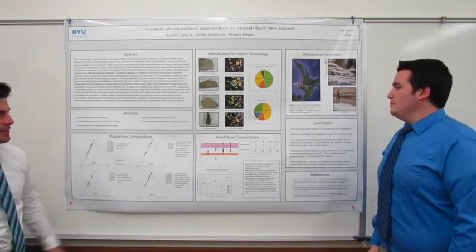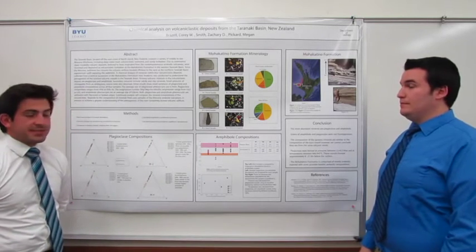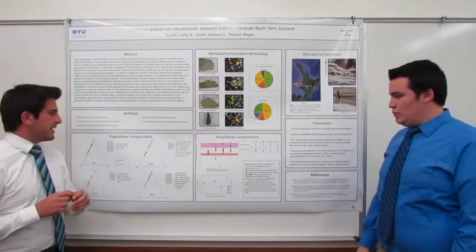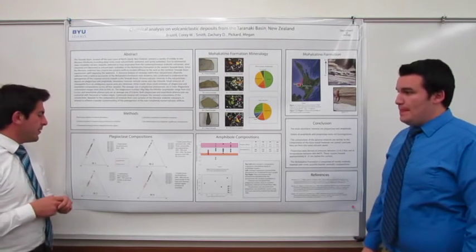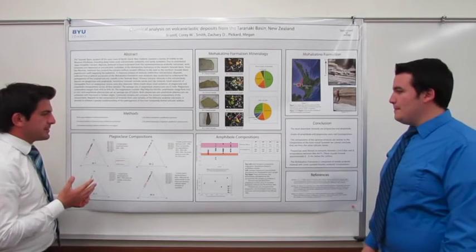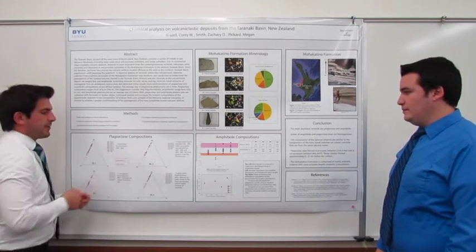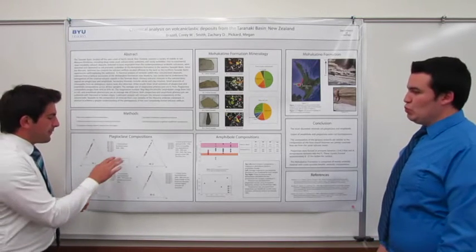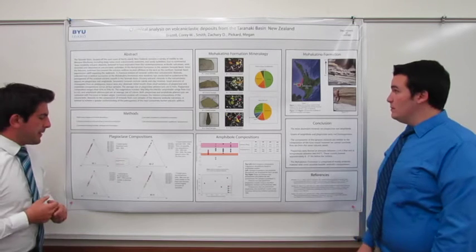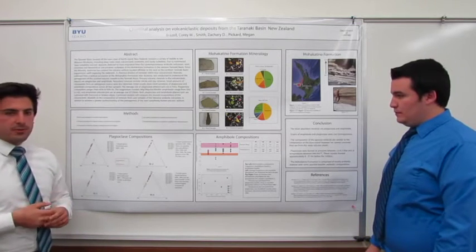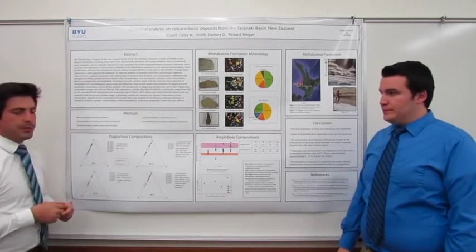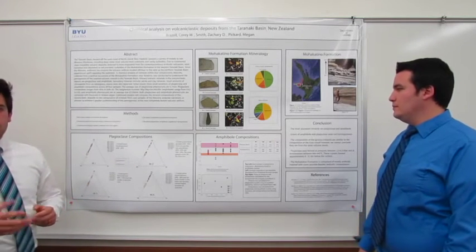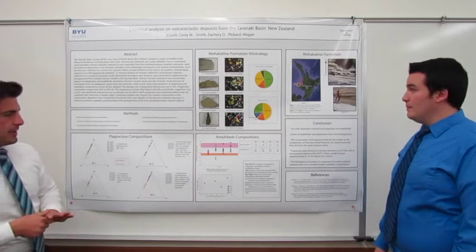Given the plagioclase and amphibole abundances, we performed analyses using an electron microprobe at BYU. We found plagioclase and amphibole compositions. Here we have ternary diagrams of anorthite, albite, and orthoclase, with the Cora averages represented by pink and orange ovals — Cora Core in pink and Cora Rim in orange. We can see that many samples fall inside these averages, but there are a number that fall outside, which we'll discuss later.